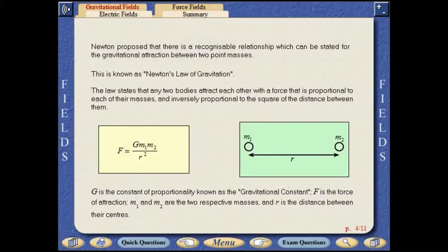Newton proposed that there is a recognizable relationship which can be stated for the gravitational attraction between two point masses. This is known as Newton's law of gravitation.